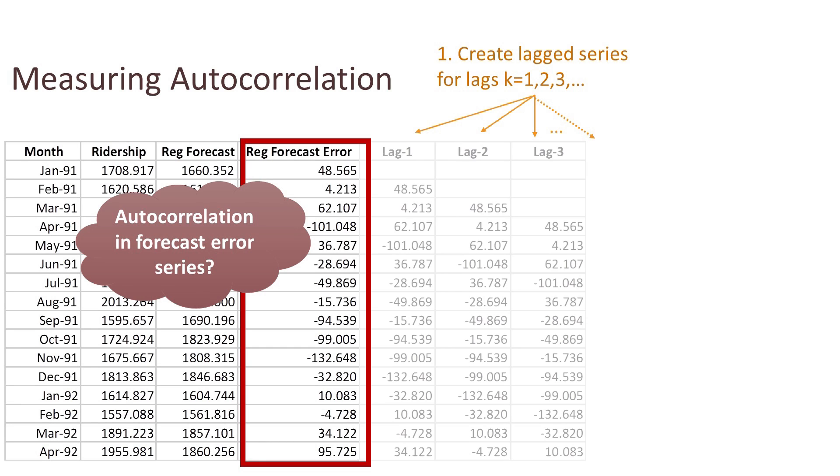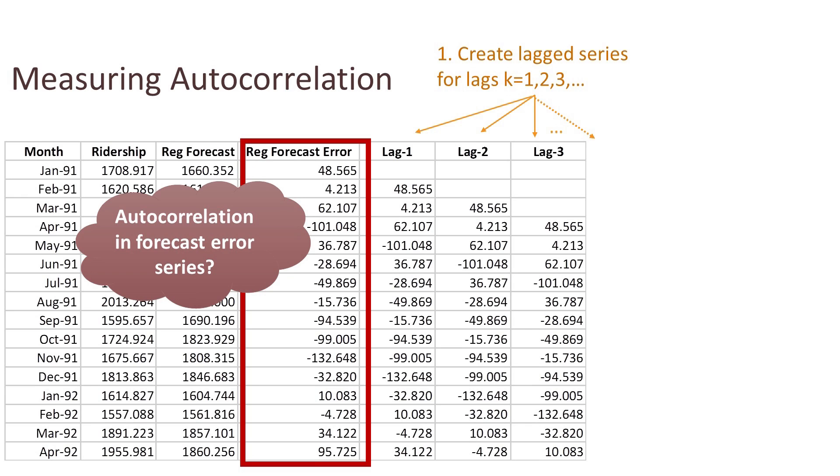If the series has n periods, we can potentially create n lagged series, but those last series will be very short. Next, we compute the autocorrelation for each lag by computing the correlation between the original series and each of the lagged series.